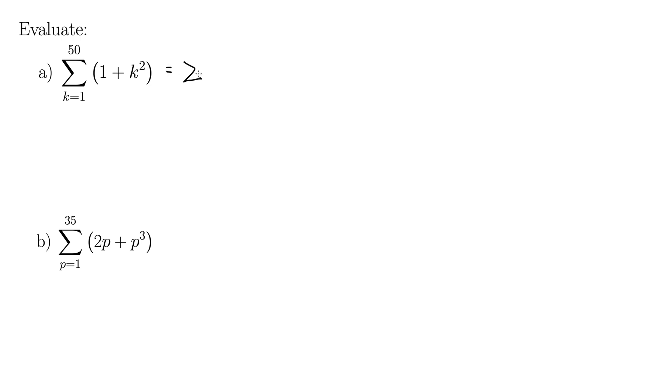We can break this up into two sums. That was one of our useful properties of Riemann sums there. So we have k equals 1 to 50. These are finite sums of 1 plus the sum, as k goes from 1 to 50, of k squared.